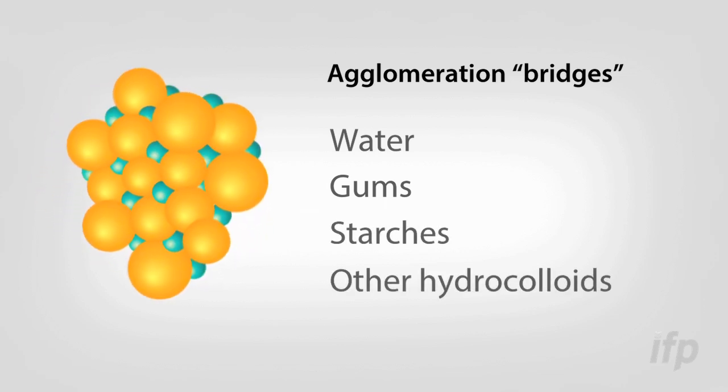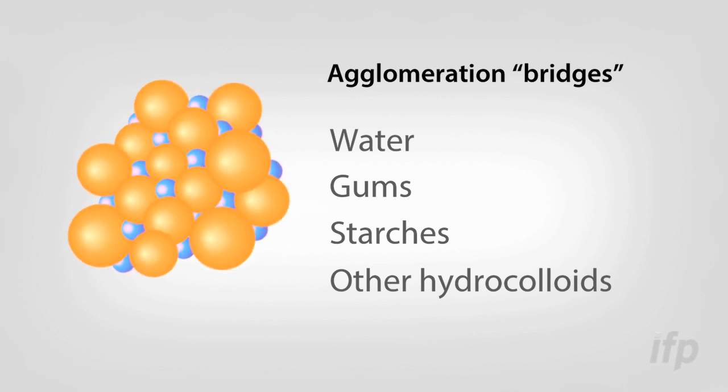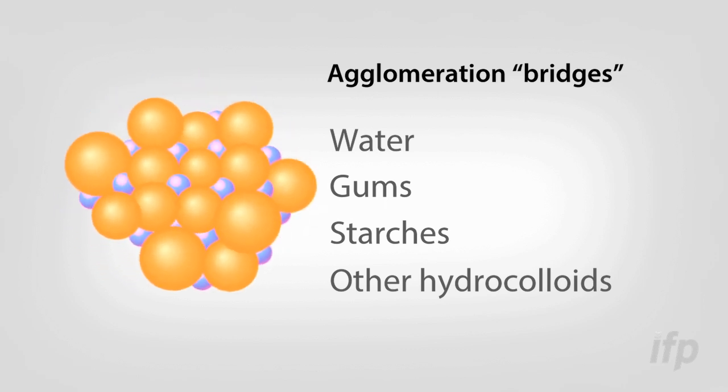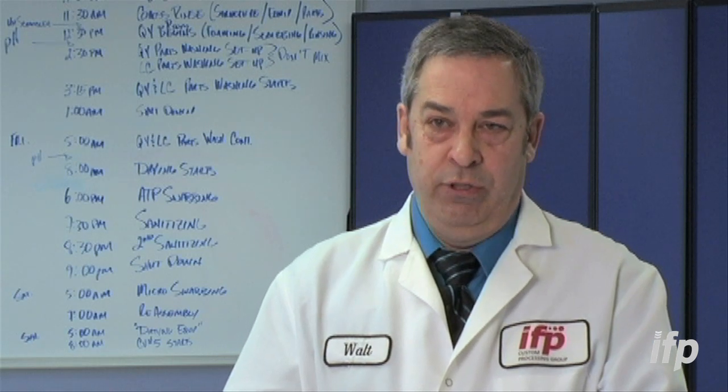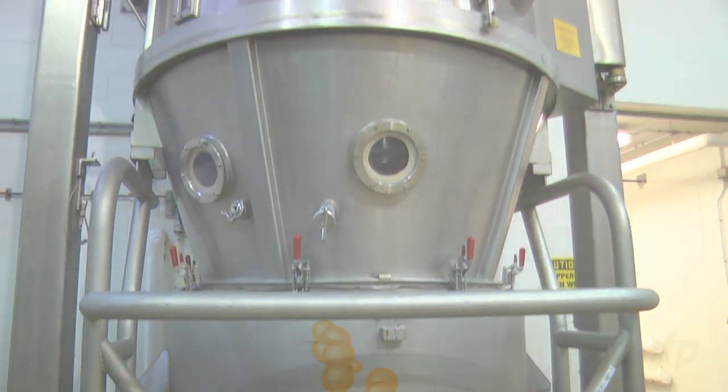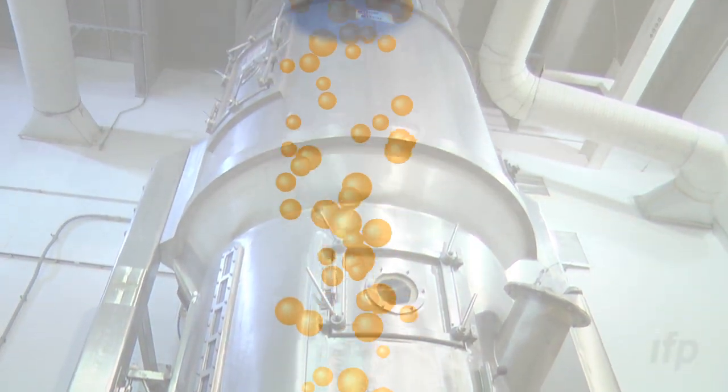The bridges can either be made stronger or weaker depending on what you're trying to accomplish. Agglomeration by IFP is accomplished by using fluid bed processing. In other words, we're blowing the particles up in the air.